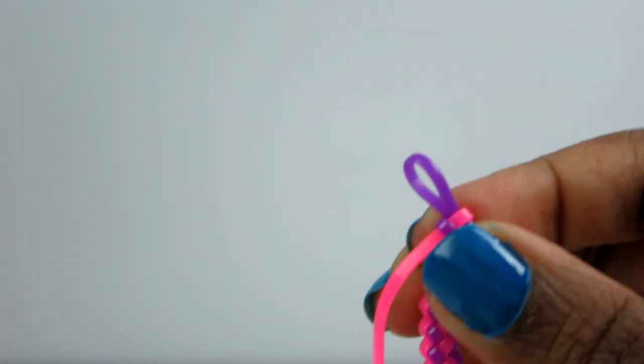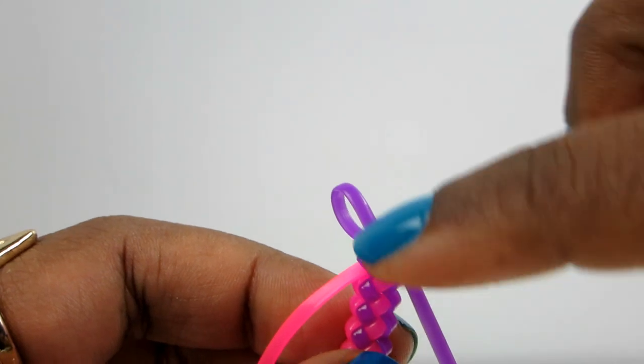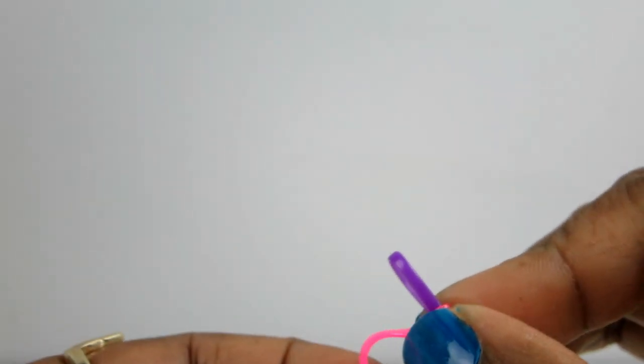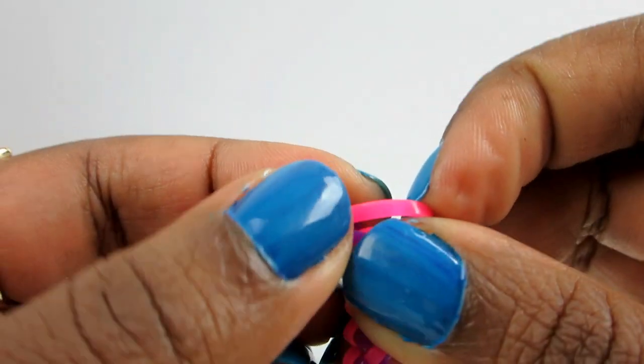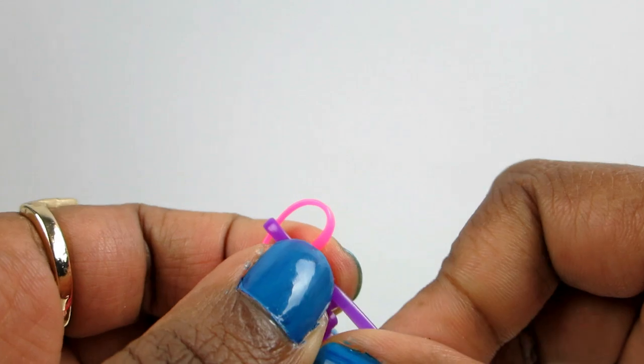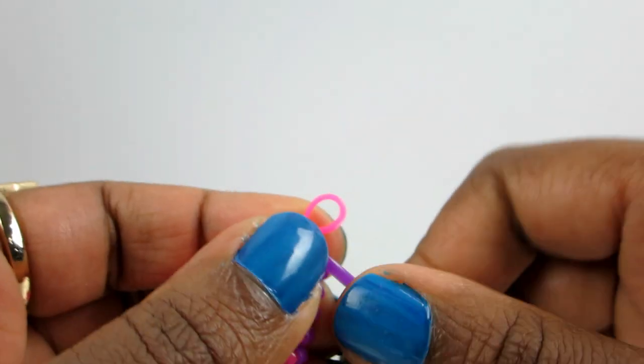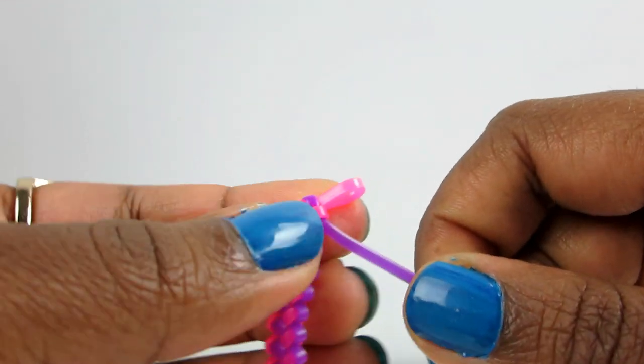So again, I've got my purple loop, it's open. I'm going to make a loop with the pink side, and put it through the purple side, and kind of fold it down here, and pull down this purple thread. And so there we go.